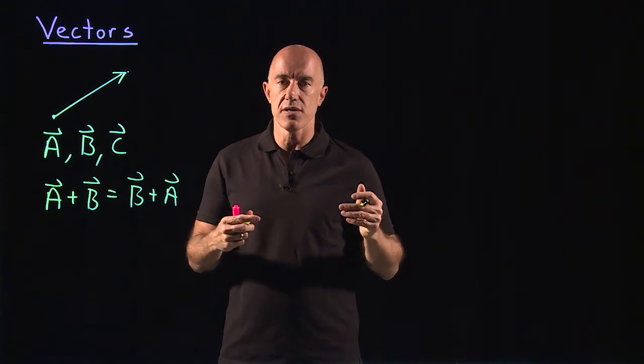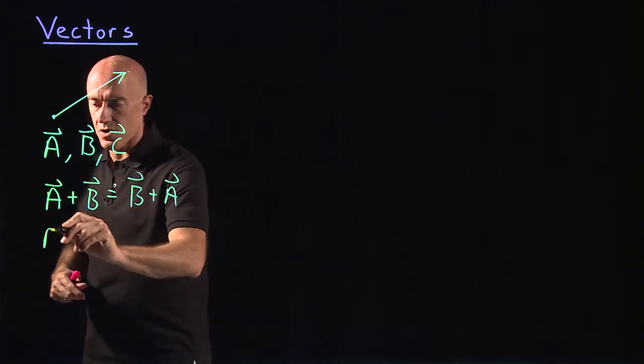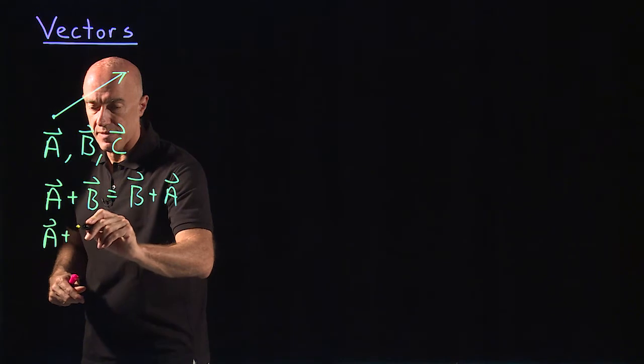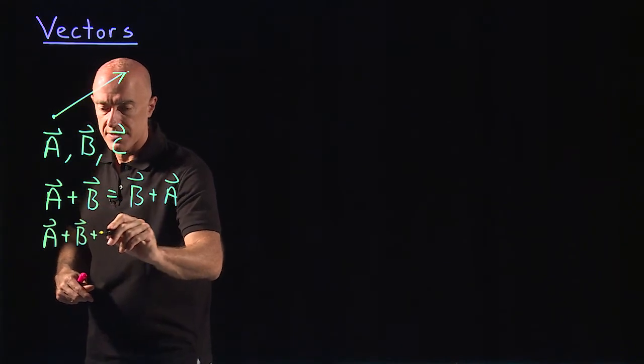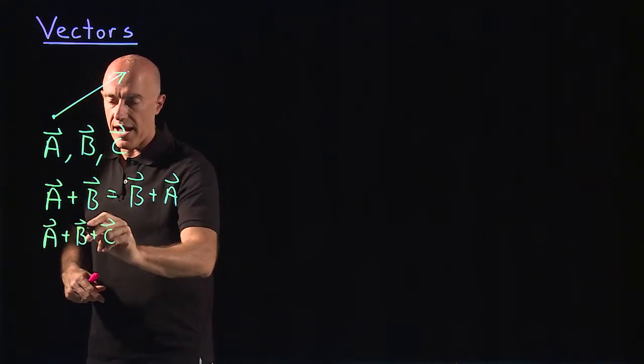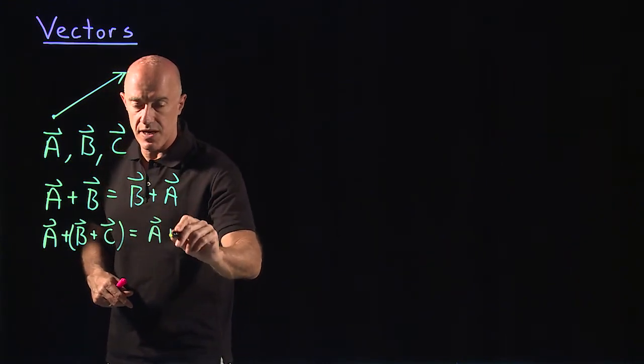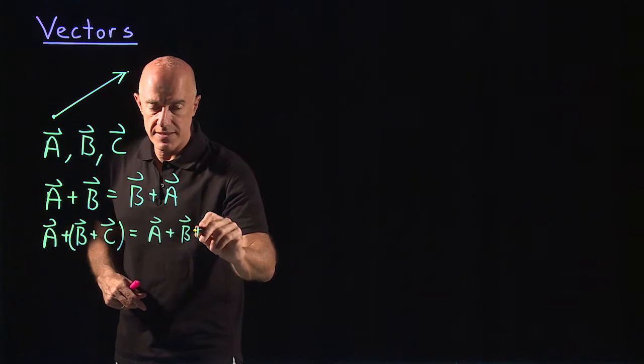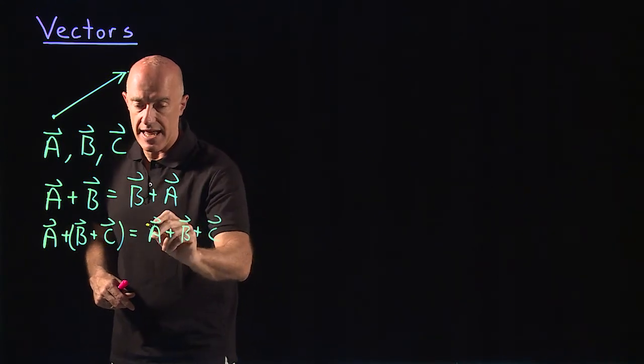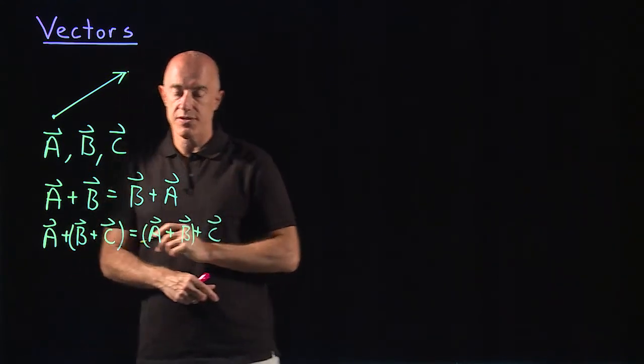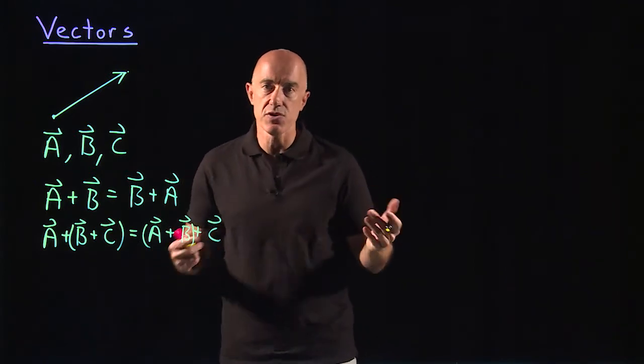Addition is also associative. So if you add three vectors, a plus b plus c, if you add b and c first, it's the same as a plus b plus c but you add a and b first. That's called the associative law.